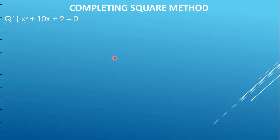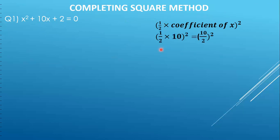Now we move on to the second step, which involves the formula: half into coefficient of x, the whole square. The coefficient of x is 10, so we have half into 10, the whole square. We can cancel 2 and 10 to get 5, so we have 5 squared which gives us 25.